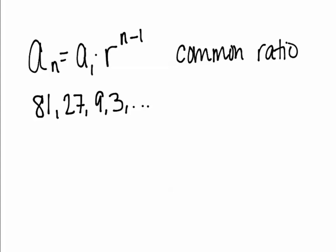For example, in the sequence 81, 27, 9, 3, you can see the pattern appears to be dividing by 3. But we're not going to say it's dividing by 3 — we're going to say it's multiplying by 1/3. So my common ratio is going to be 1 over 3.